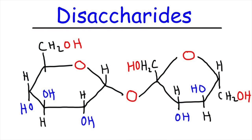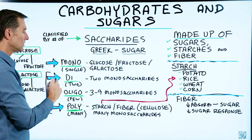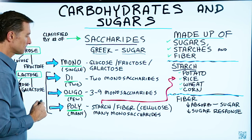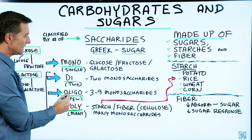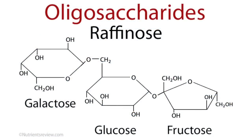The disaccharide and the other two types I'm going to talk about make up the complex carbohydrates. So monosaccharides are simple, and disaccharides and beyond are the complex carbohydrates. Now we're going to get to oligosaccharides, which are three to nine saccharide units.